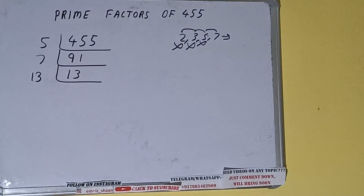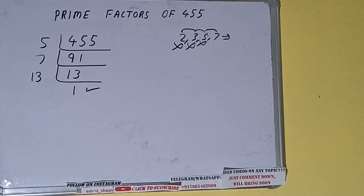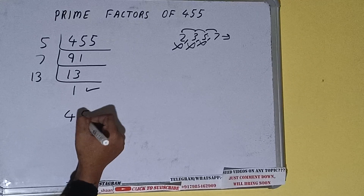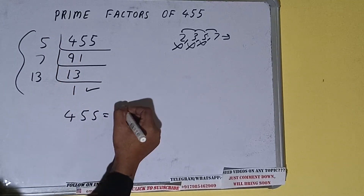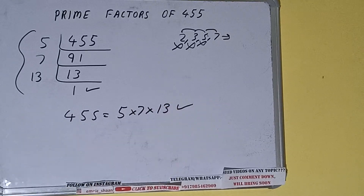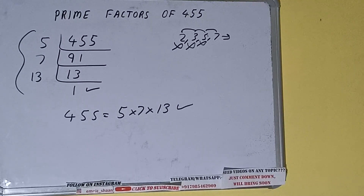Once we divide 13 by 13 we get 1, and once we get 1 we need to stop. The prime factors of 455 are whatever we have on the left-hand side, that is 5 × 7 × 13 — that is the answer. If you found the video helpful, please click the like button, do consider subscribing, and thanks for watching.